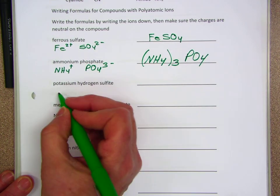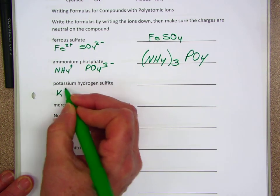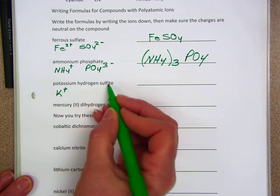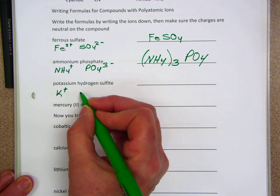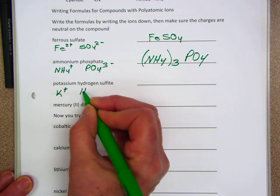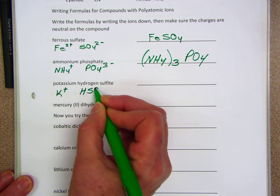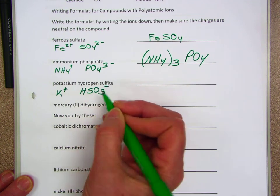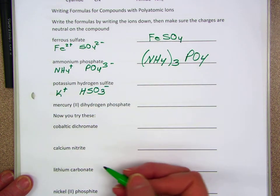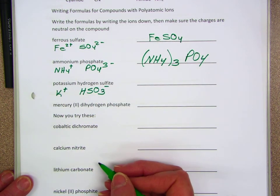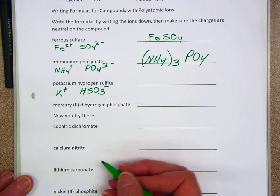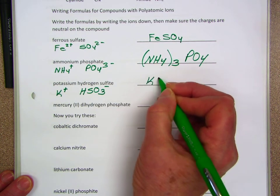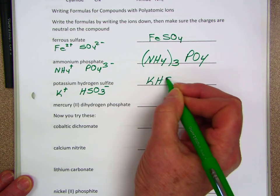Potassium is an alkaline metal, so it's +1. Hydrogen sulfite is HSO3-: sulfite is a 2-, so hydrogen sulfite is a 1- because I've added that hydrogen. So the formula is KHSO3.